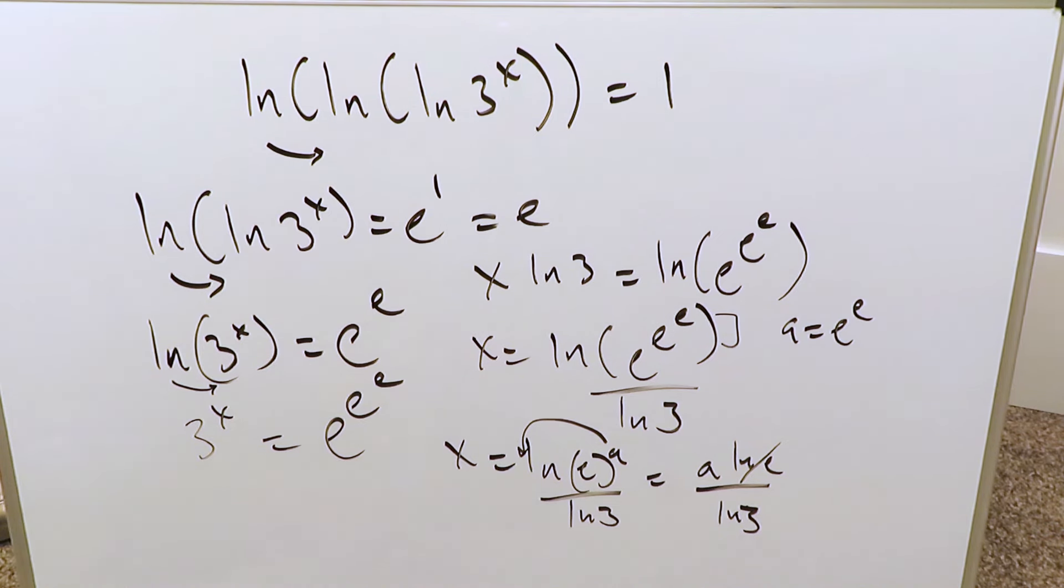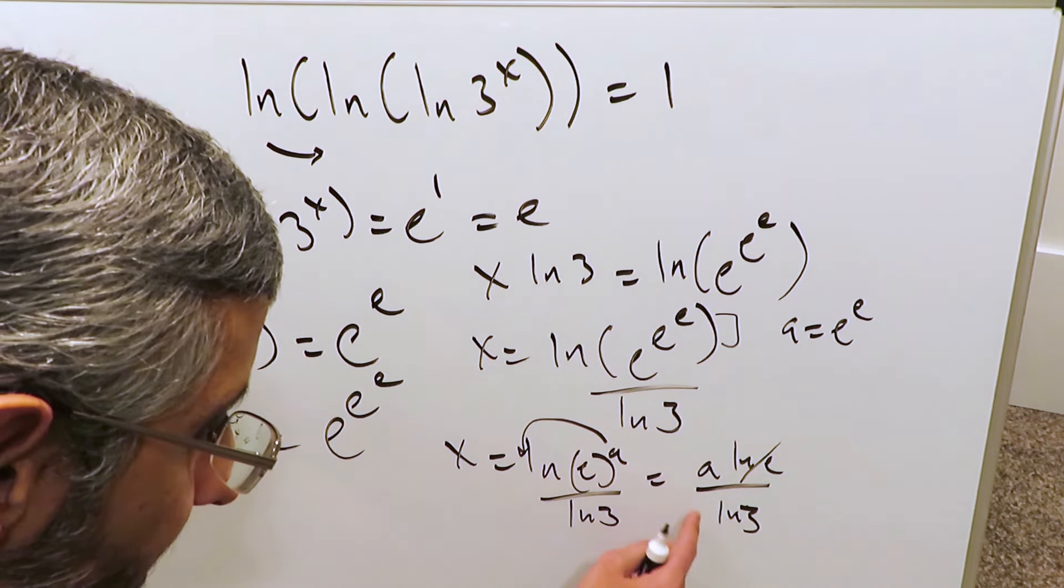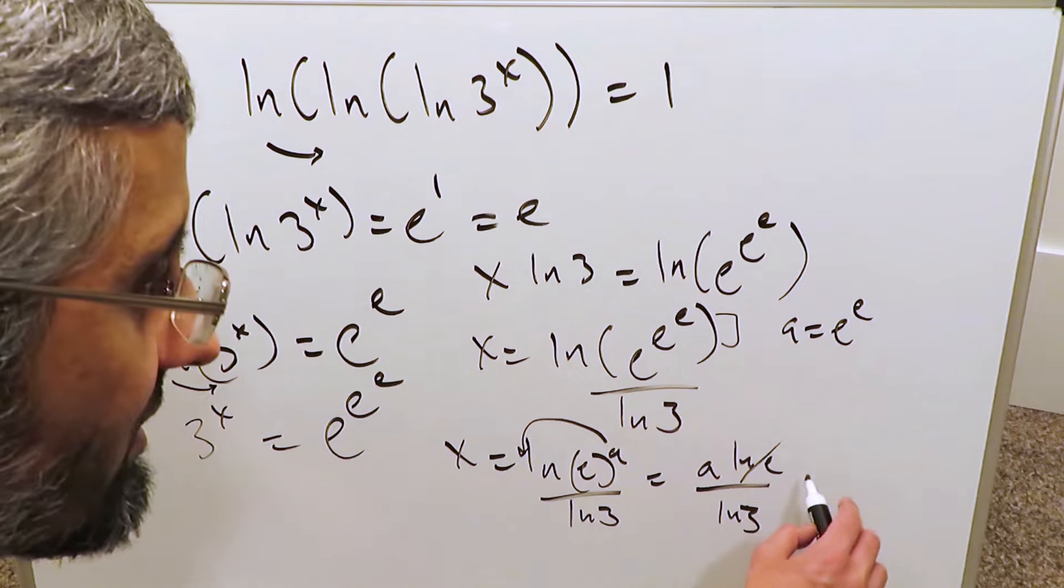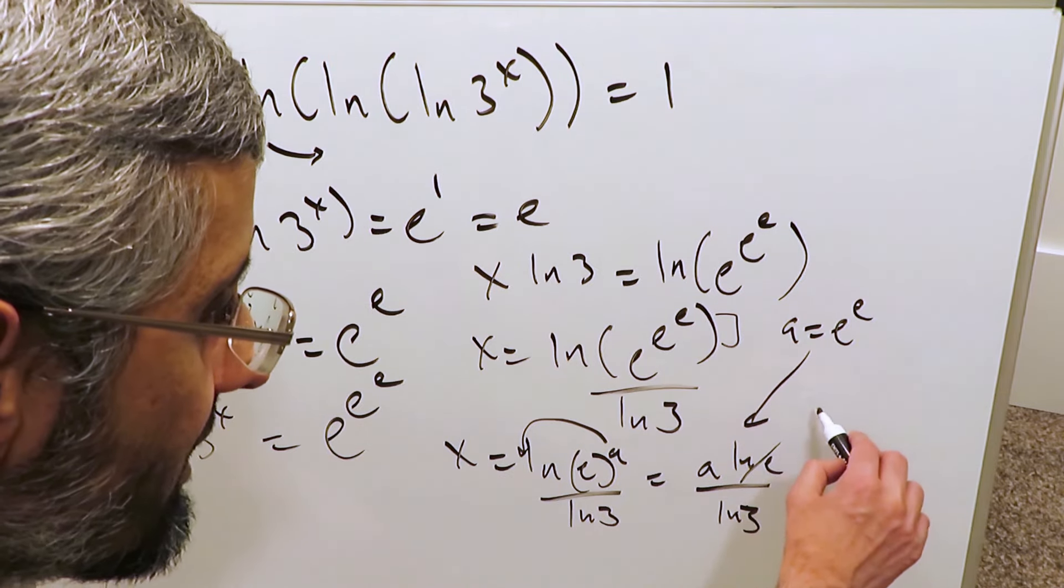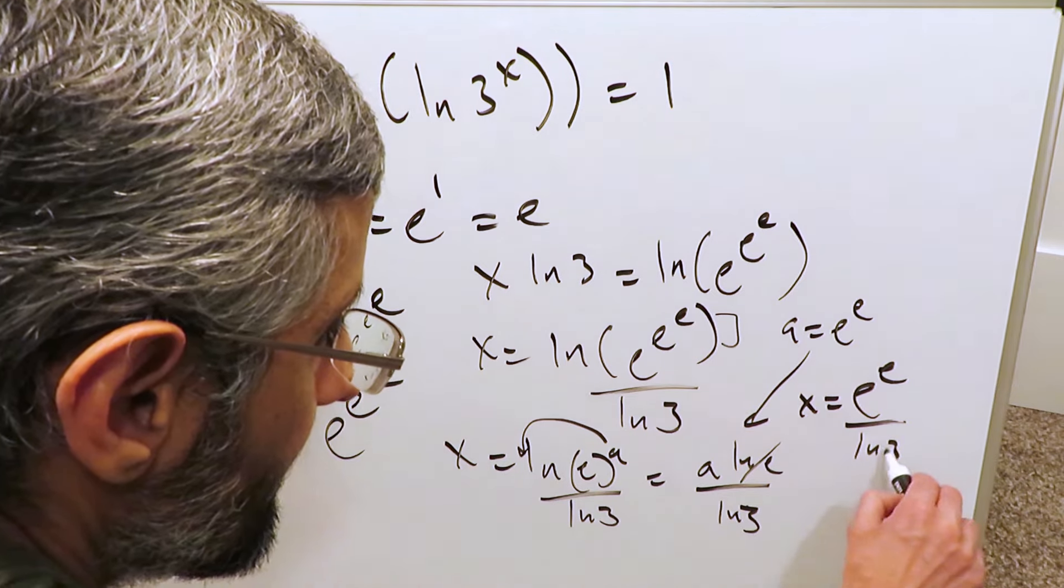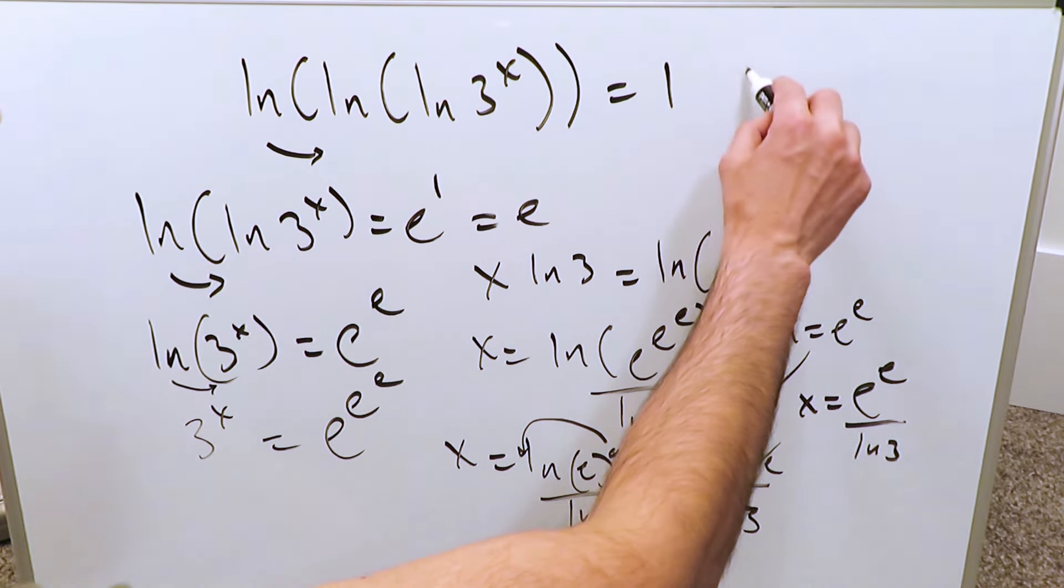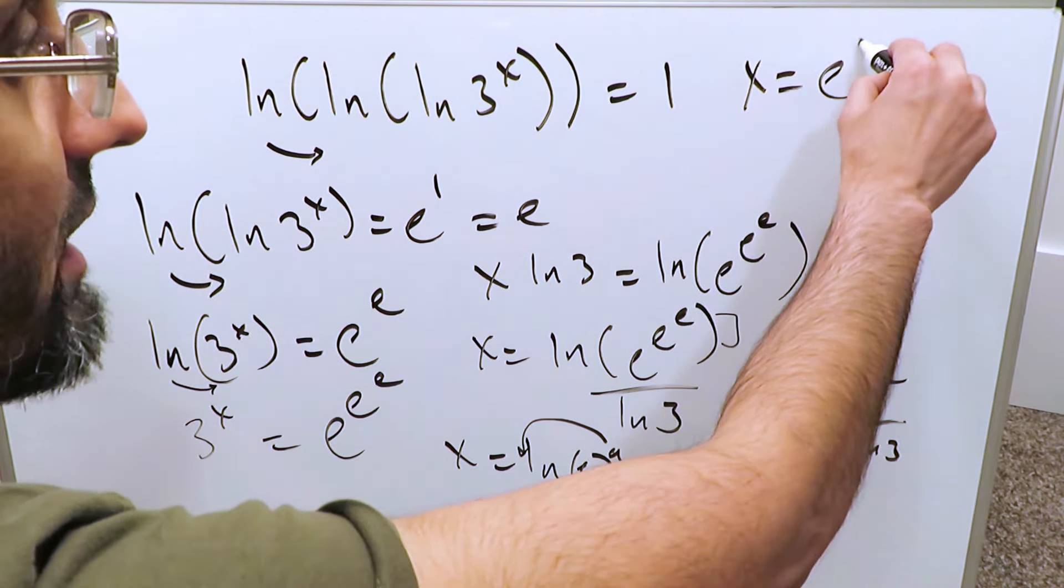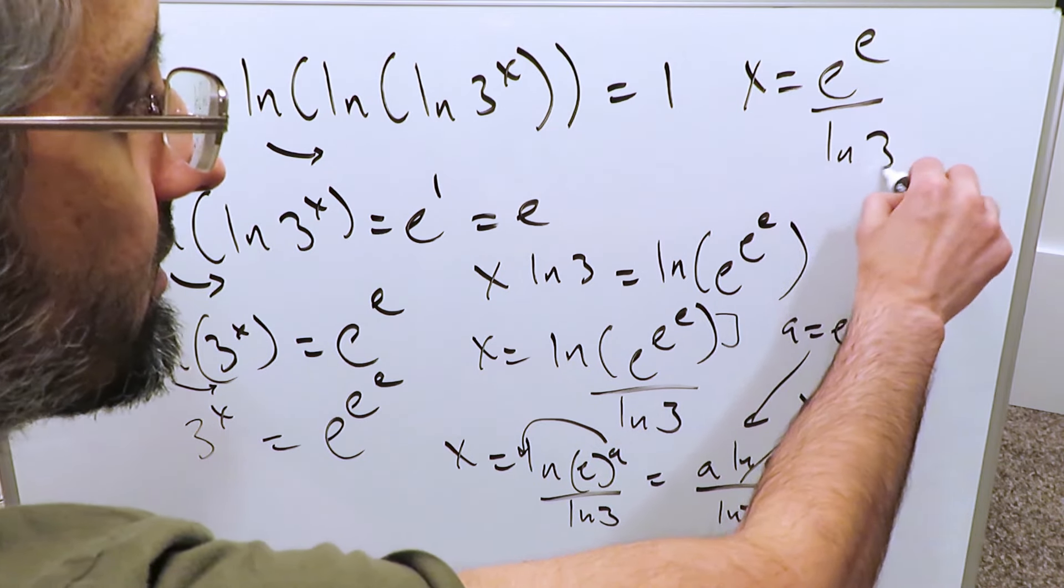What do we have left? a divided by natural log 3. I have x is equal to a over natural log 3. When you resubstitute the a value, you end up saying x is equal to e exponent e divided by natural log 3. And that has to be the value of x. We'll put it for you right here: x is equal to e exponent e divided by natural log 3.